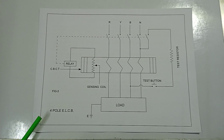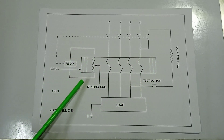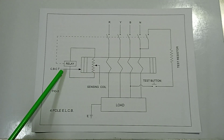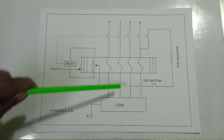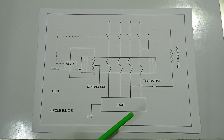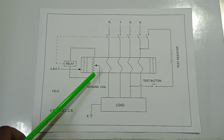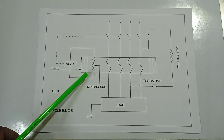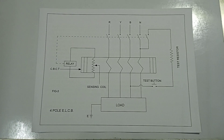Figure 3 shows a four-pole ELCB with its CBCT. The secondary of the CBCT includes the sensing coil and relay. The R, Y, B phases and neutral all pass through the CBCT core toward the load. There is also a test button. When any earth leakage current is detected, the sensing coil energizes the relay, which activates the circuit breaker.